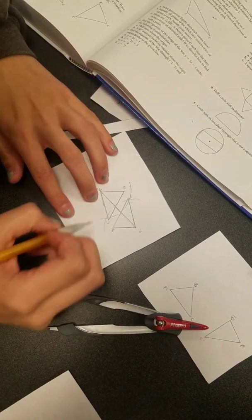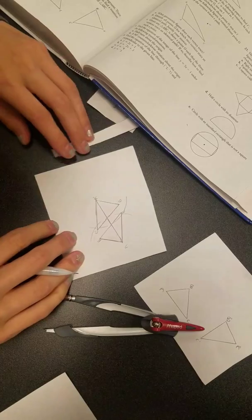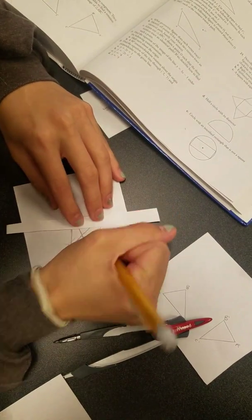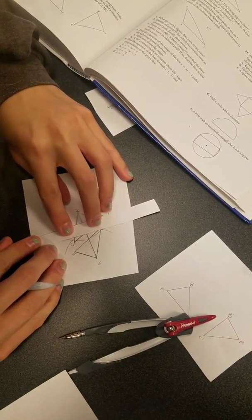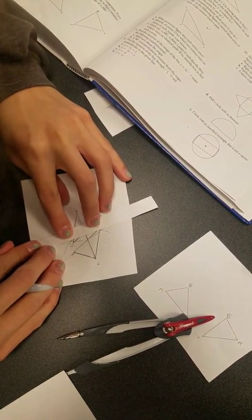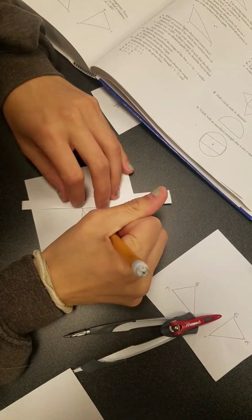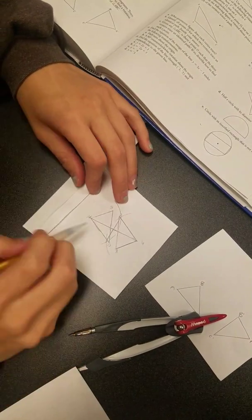And then where they intersected, right there and right there, you're going to use your straight edge and connect the points of intersection.